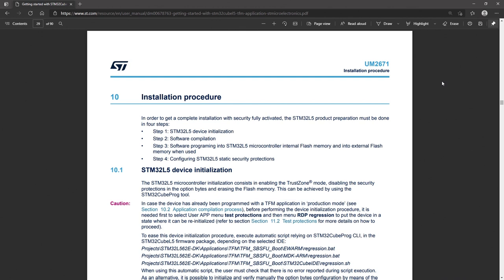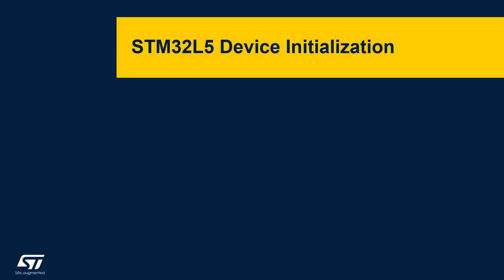The first step is STM32L5 device initialization. This consists in enabling the TrustZone mode, disabling the security protections in the option bytes, and erasing the flash memory. This step requires the STM32CubeProgrammer tool.